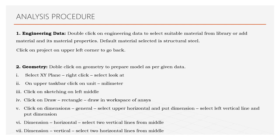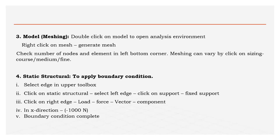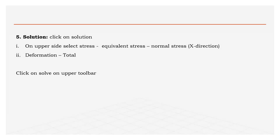First of all, the engineering data — here the material properties can be provided for the component for which we have to do the analysis. The second step is geometry, to prepare a geometry for which you will find out the stress analysis or displacement. Third is the model, which is nothing but the meshing — here we have to divide the body into a number of elements and nodes. Fourth is the static structural, which is nothing but applying the boundary condition. Fifth is the solution — here you will find the solution with the help of mathematical equations. And last one is the results, or post-processing — here we can find the contour plot for displacement, equivalent stress, normal stress, and so on.